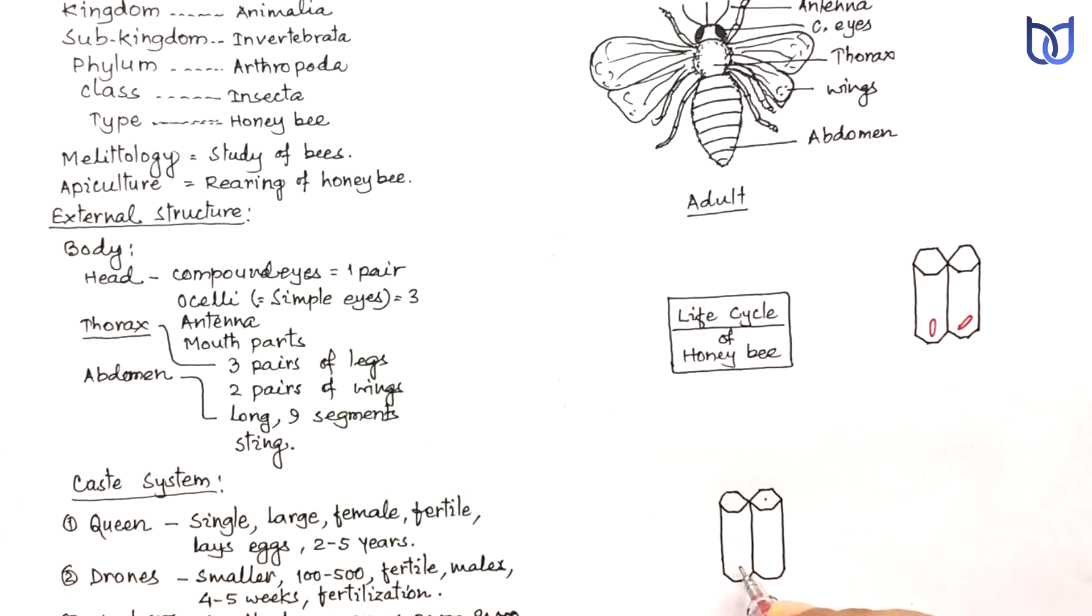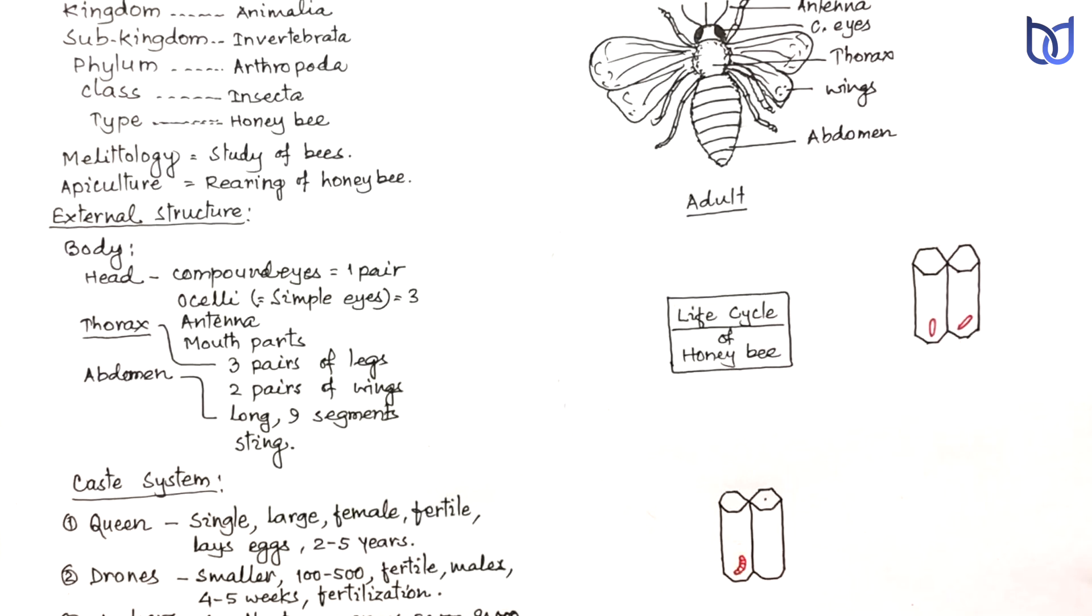The larvae is also small, elongated, cylindrical, and segmented. It is legless and without eyes, just appearing like a grain of rice. It has a small mouth, and larvae is the feeding stage. It grows in the brood cell and is fed by the worker bees.